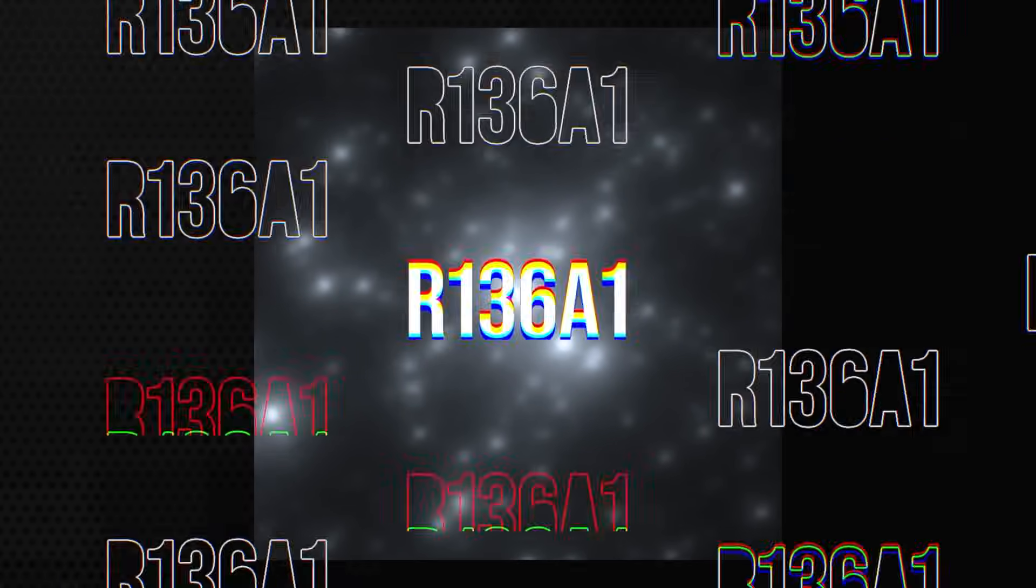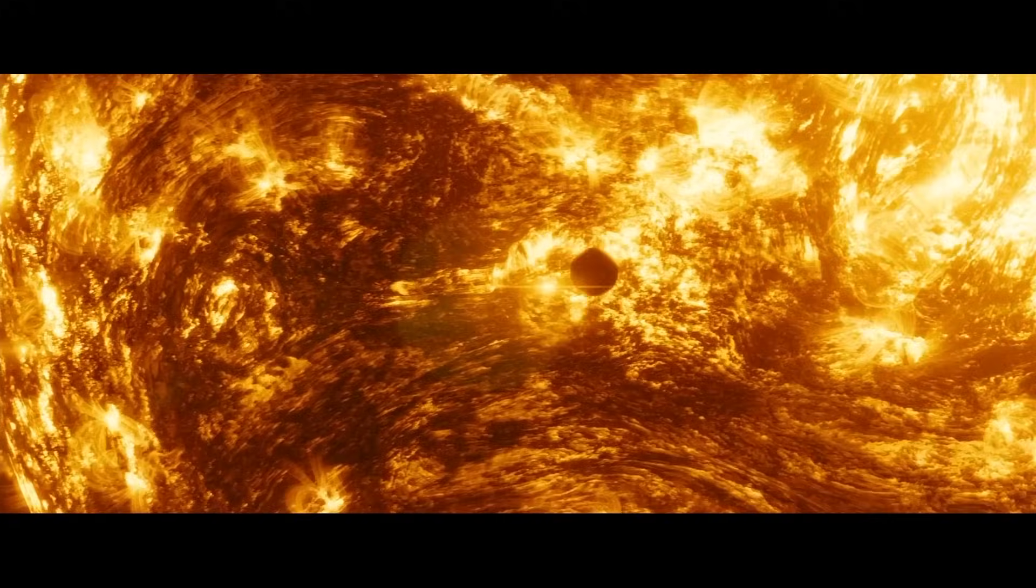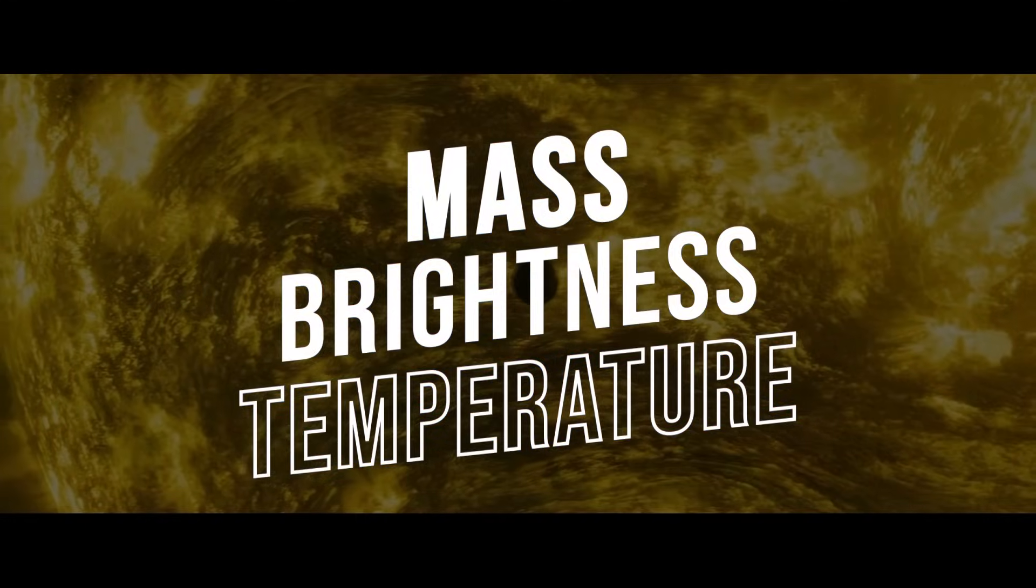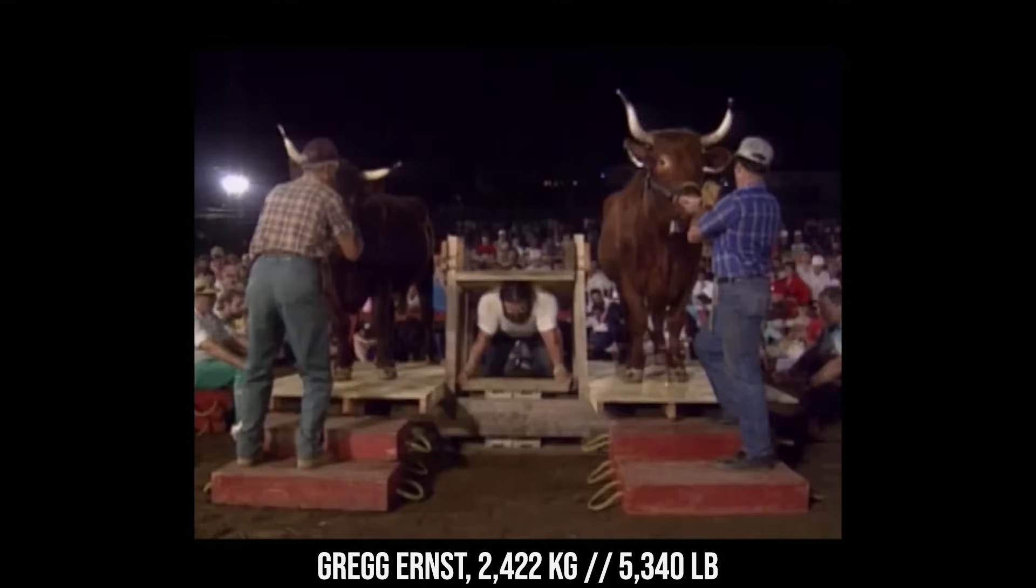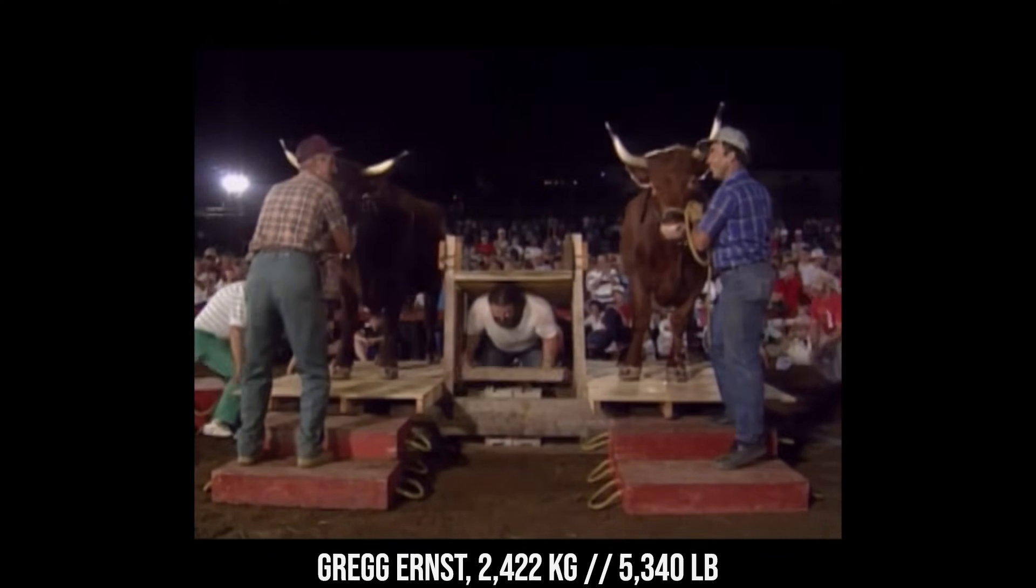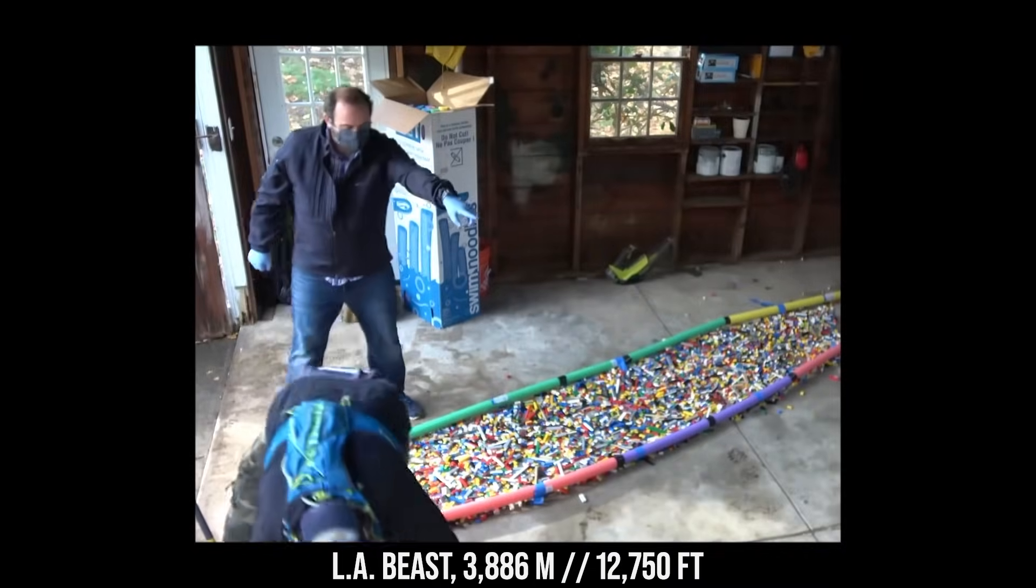If our Sun ever got that hot, it wouldn't just boil away the ocean and atmosphere—it would vaporize most chemical elements on Earth. Scientists suspect that WR102 is nearing the end of its life and could soon explode as a supernova, surrendering its title as the hottest star in the universe. Although R136a1 didn't take the crown in any specific category, its rare combination of mass, brightness, and temperature makes it truly one of a kind.